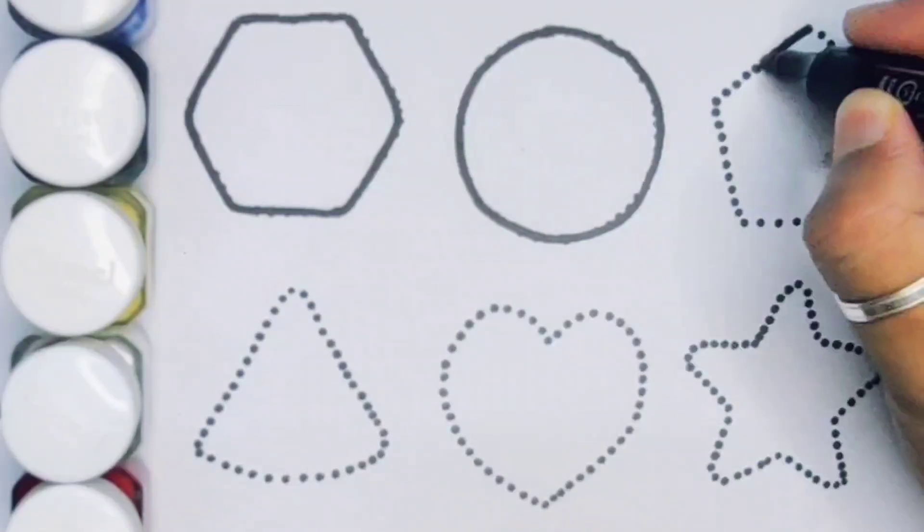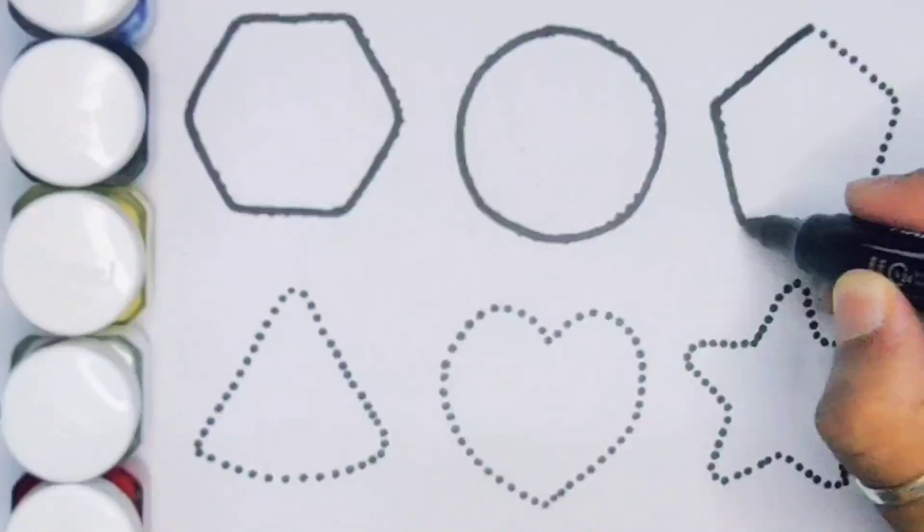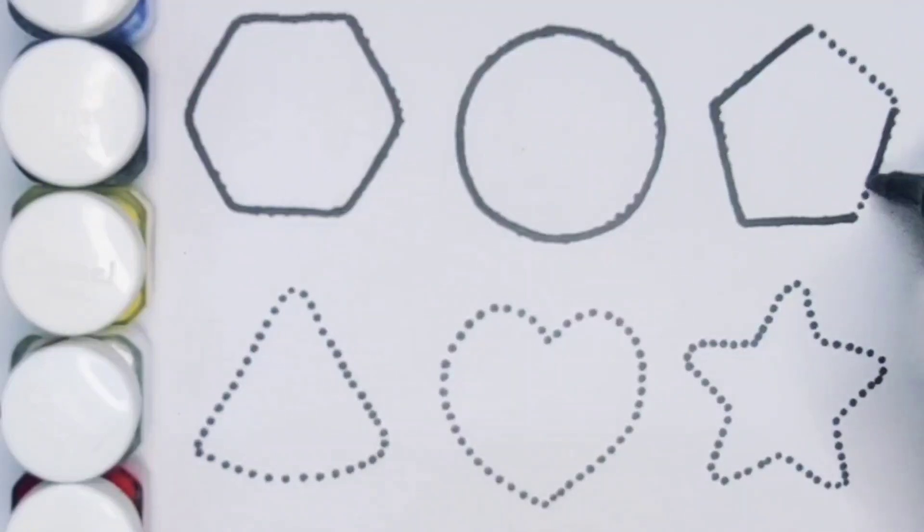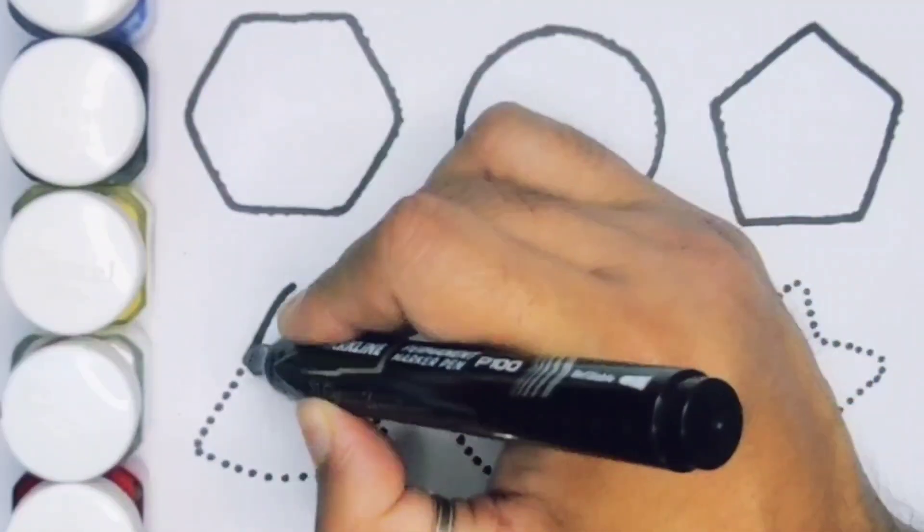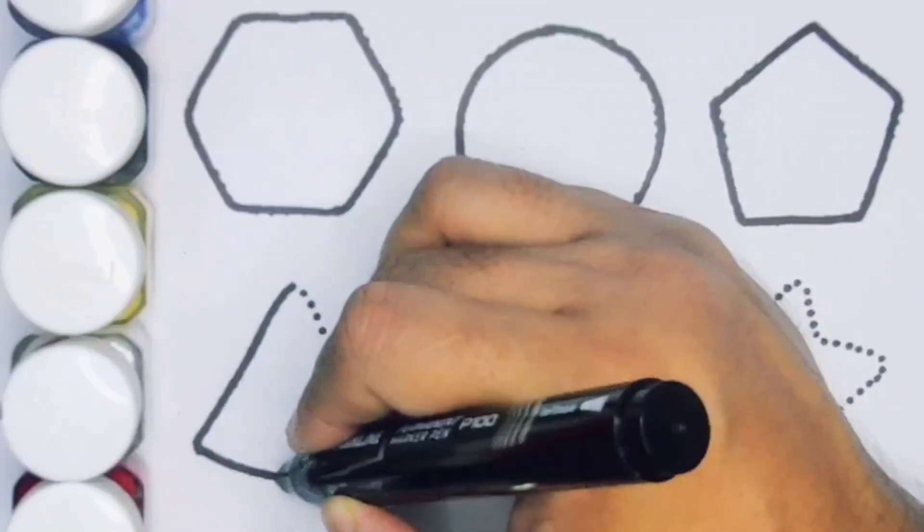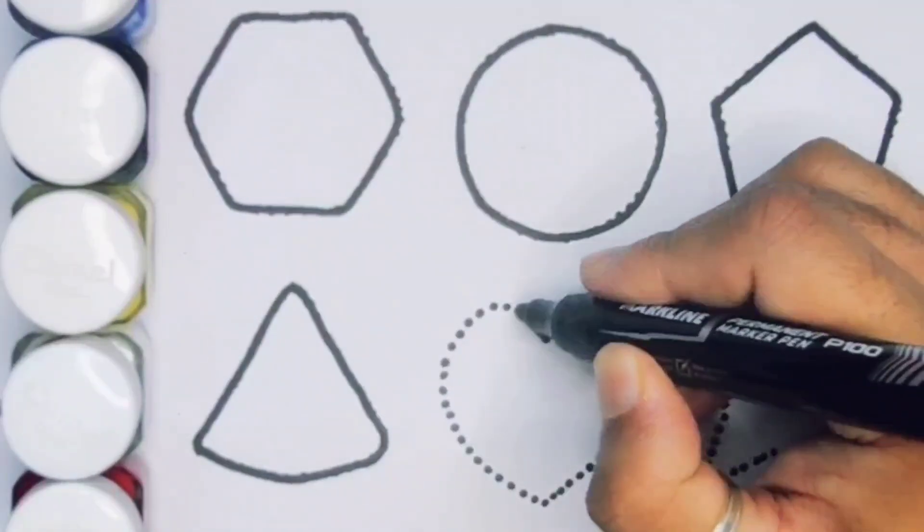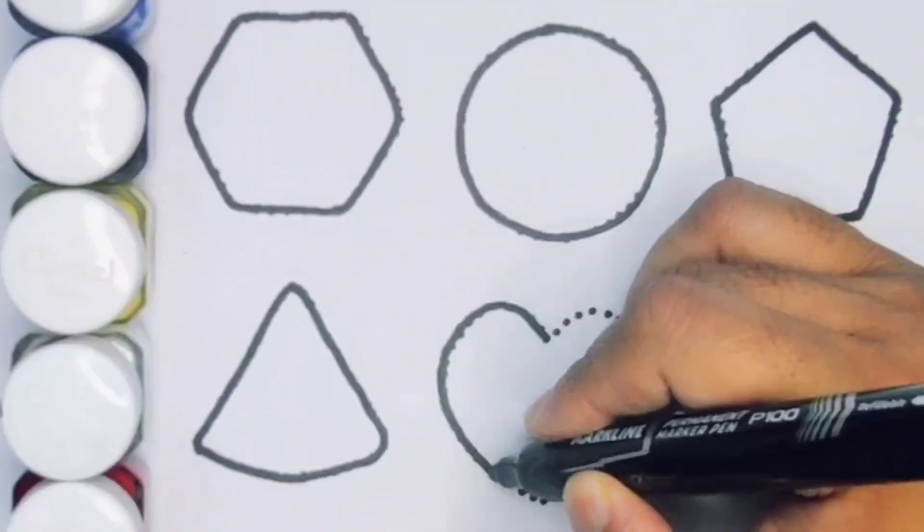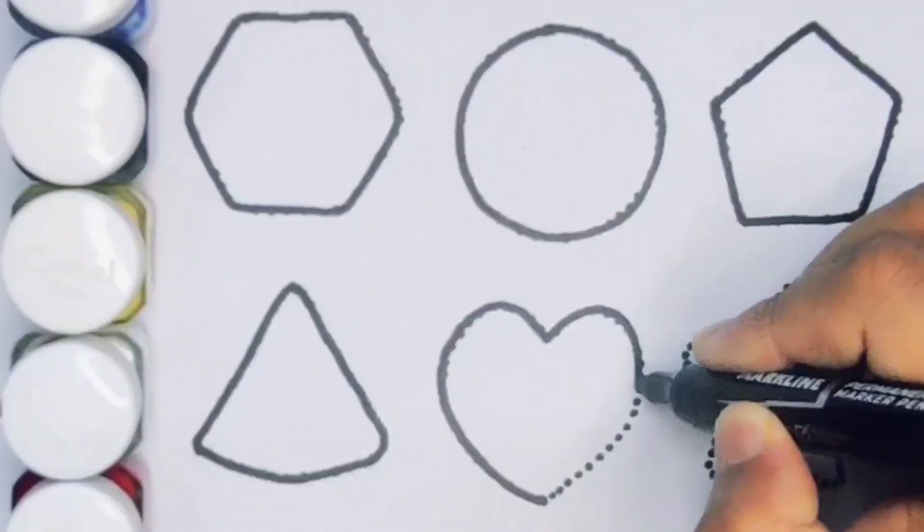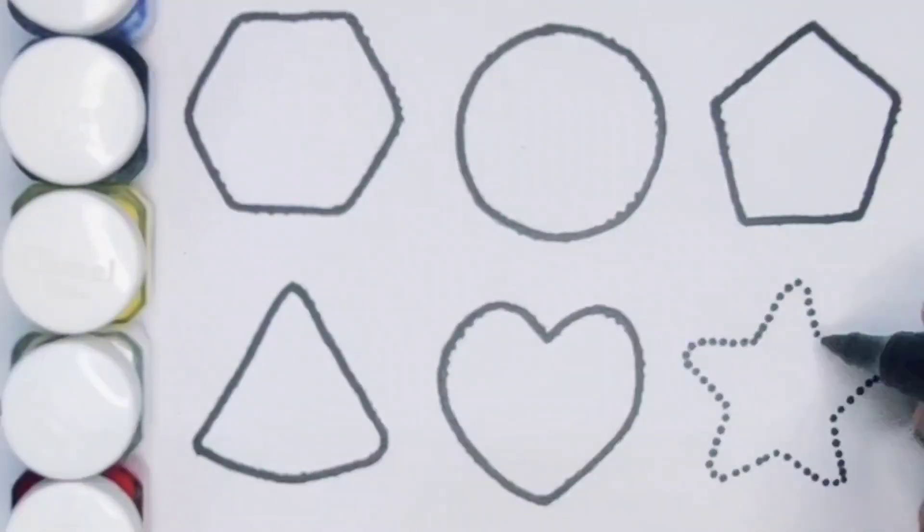Hexagon, circle, triangle. Next pentagon. Next kids, triangle, heart, next star.